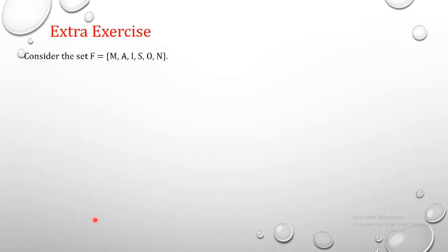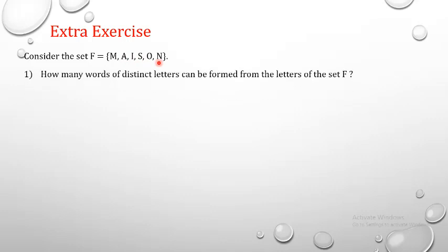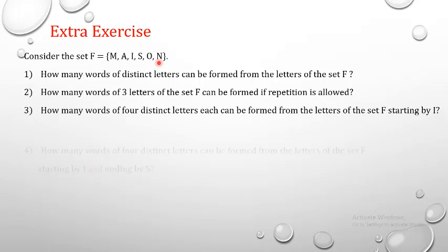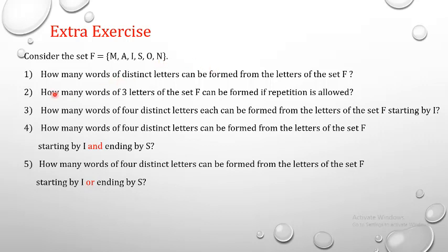Now we have an extra exercise. Consider the set F containing the letters M, A, I, S, O, N. First question: how many words of distinct letters can be formed from the letters of set F? When we read this question, we recognize it as a permutation question since set F contains 6 letters and we want distinct letters. The answer will be 6!.